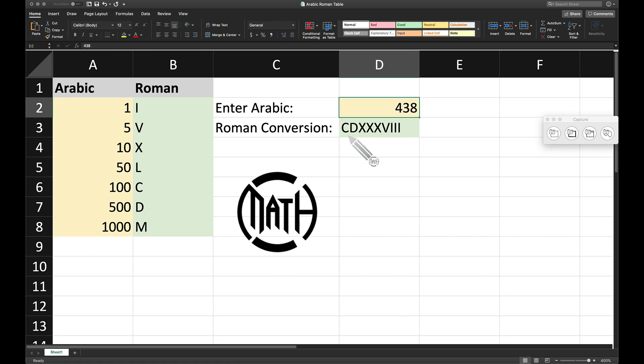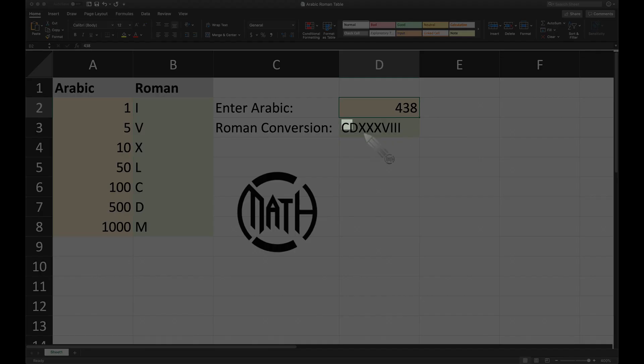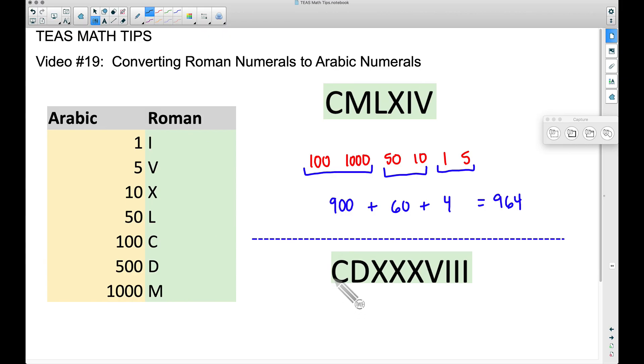So now let's look at 438. This looks crazy, right? So let's copy this over and let's see how to convert this. Again, let's write down what each letter represents. The C is 100, the D is 500. Now we got XXX, so that's three tens - 10, 10, 10. Then we have a V which is a 5, and then we have three tallies - 1, 1, 1.